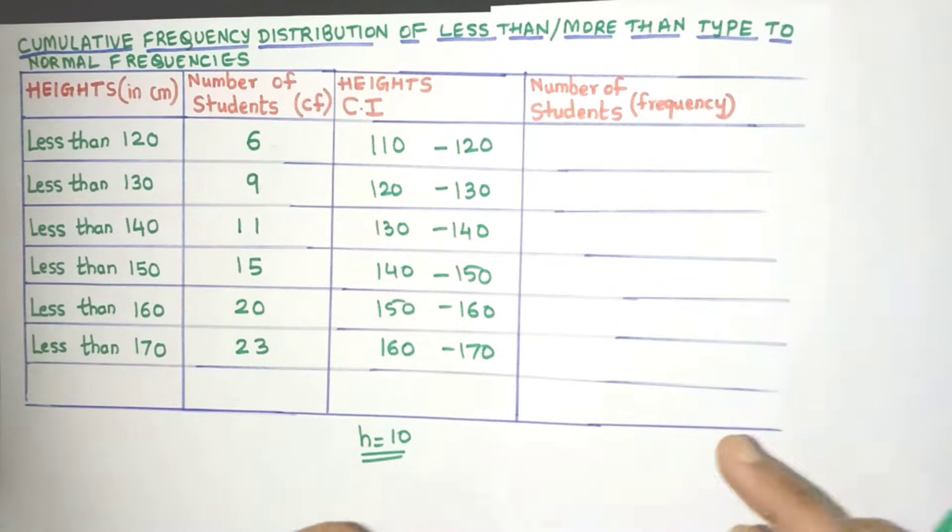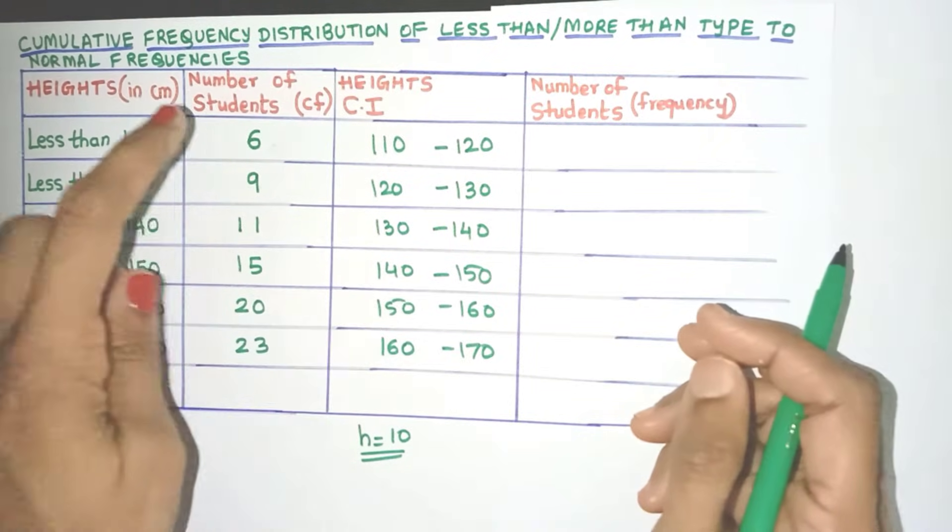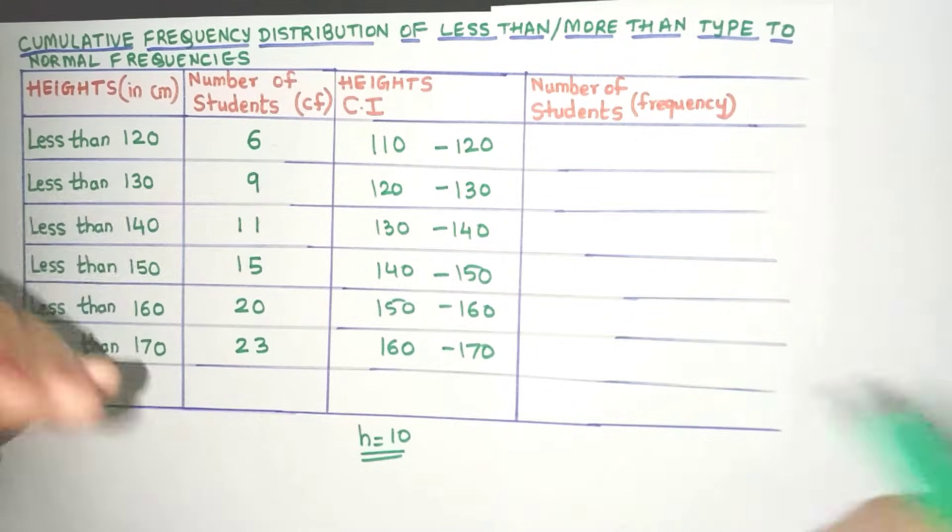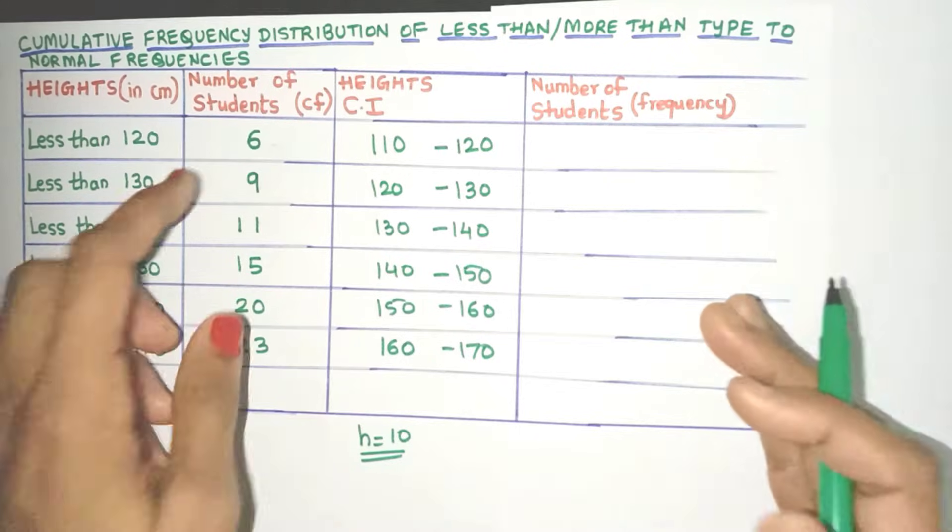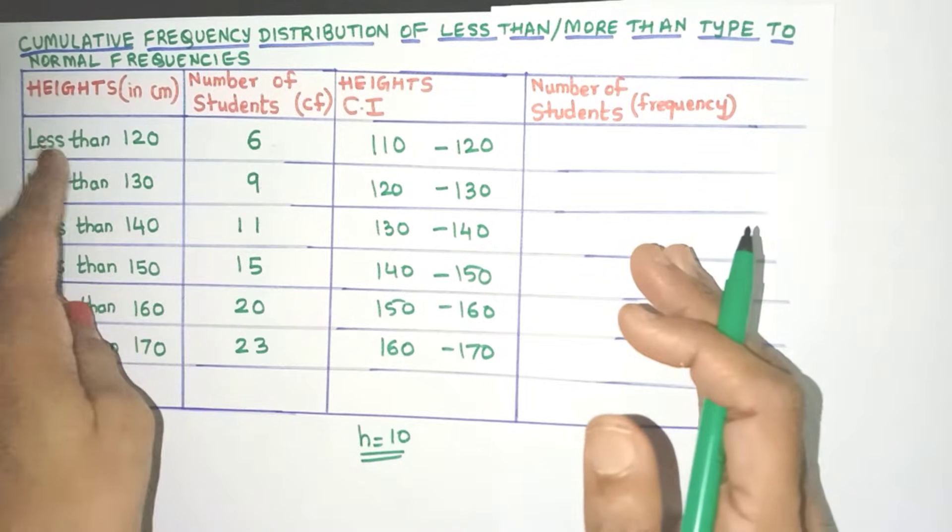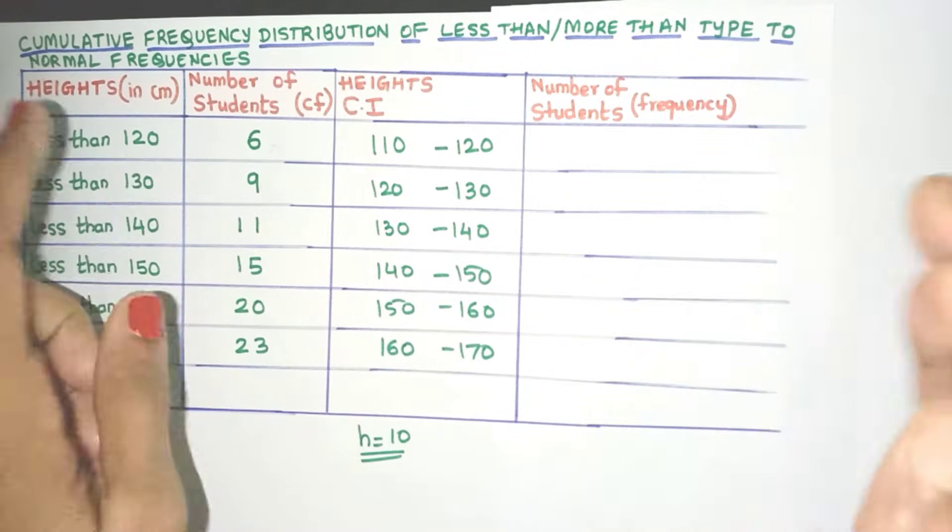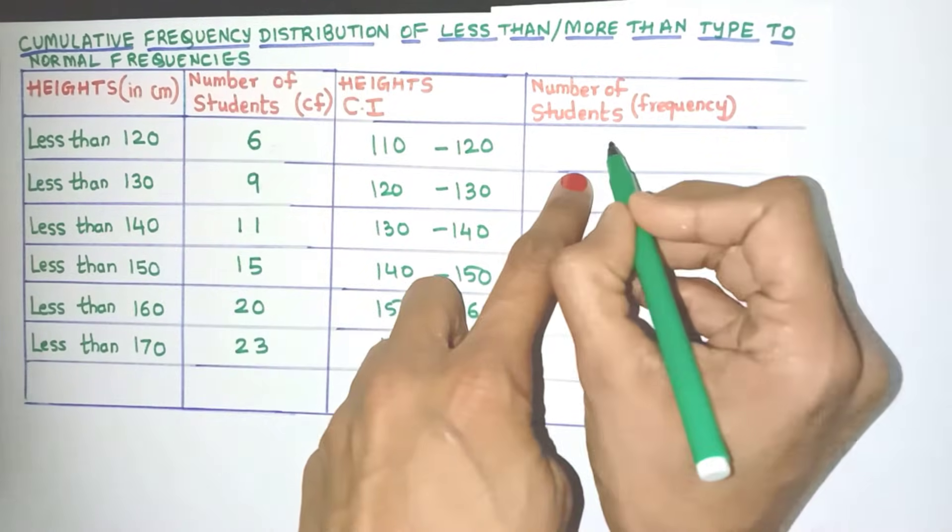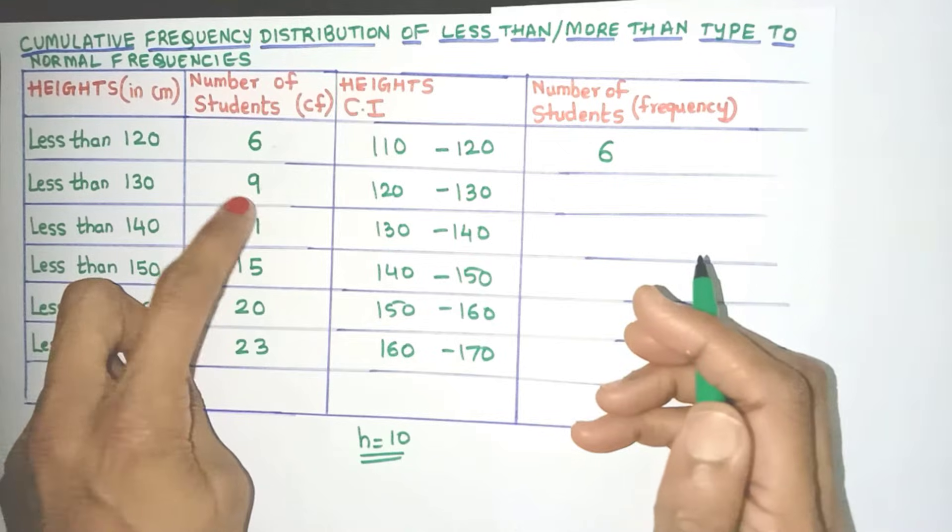Now let's find the normal frequencies. Now it is given that 6 students have height less than 120. Now does this 6 include any other frequency? No, it's only the frequency of less than 120 centimeters. So automatically I can write this CF value as the frequency.